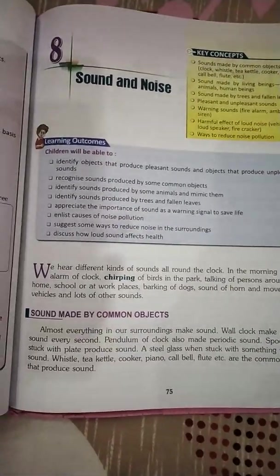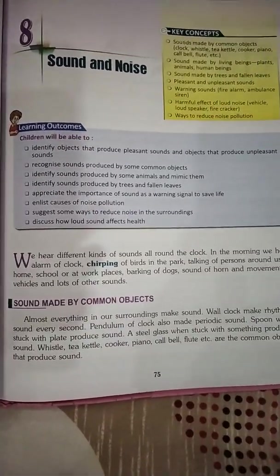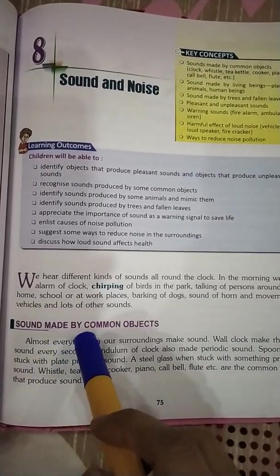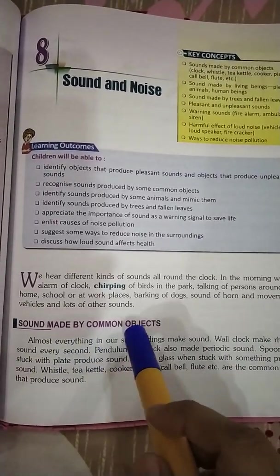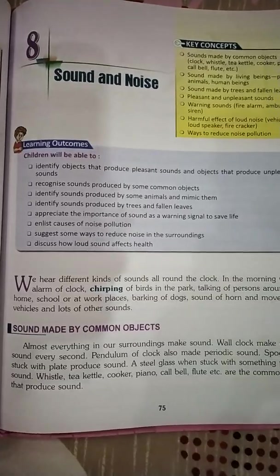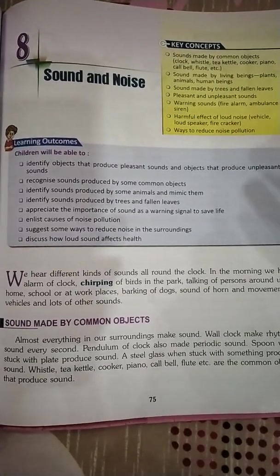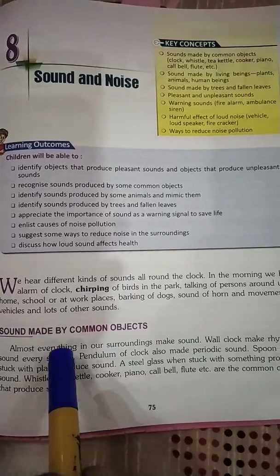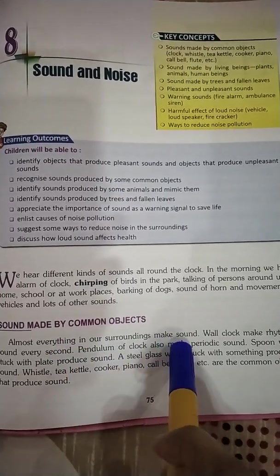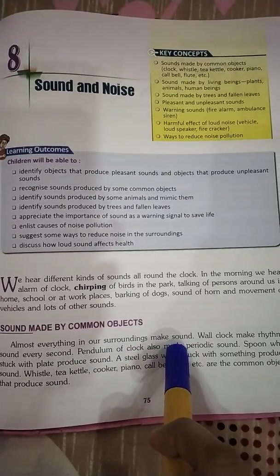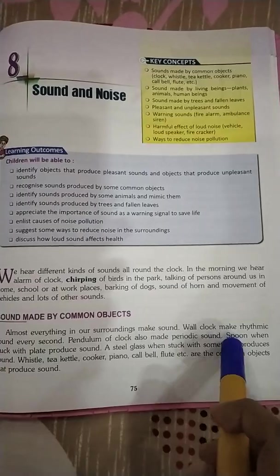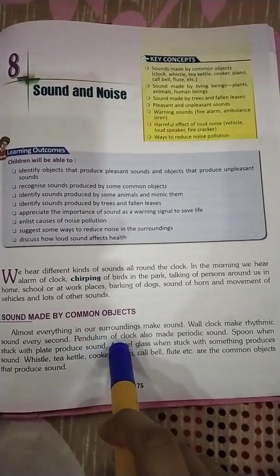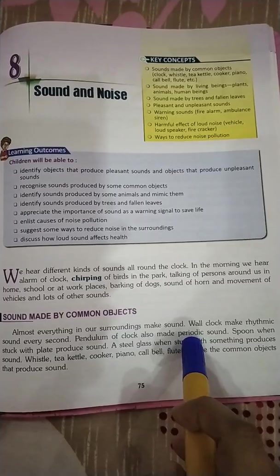Now let's discuss about different kinds of sounds — sounds made by common objects. Almost everything in our surrounding makes sound. A wall clock makes a rhythmic sound every second, and the pendulum of a clock also makes a periodic sound.